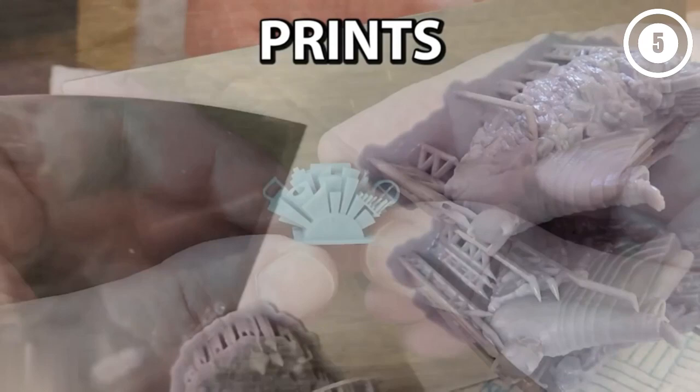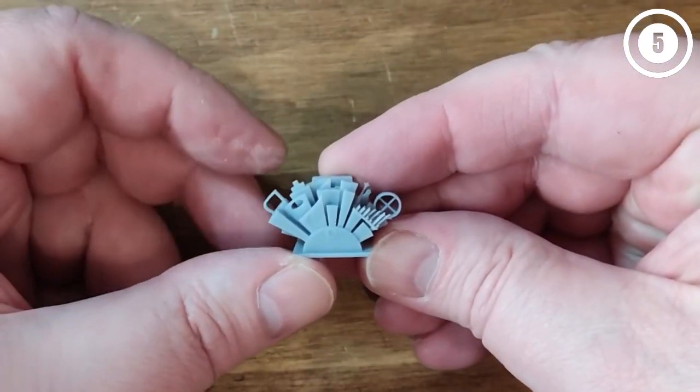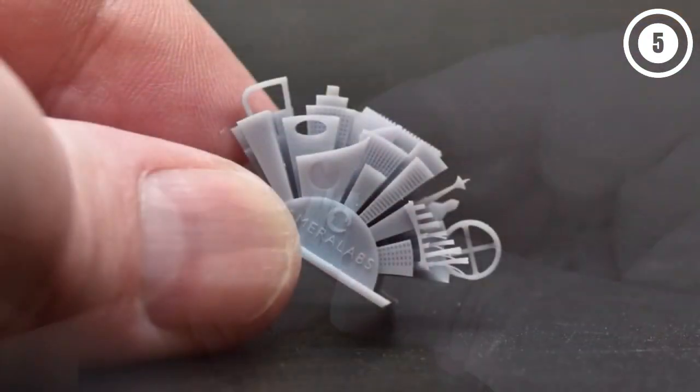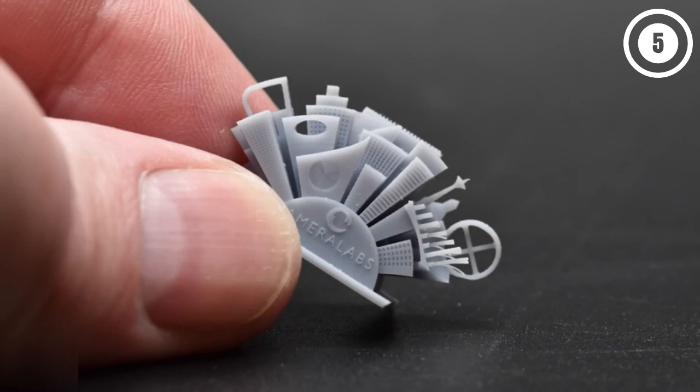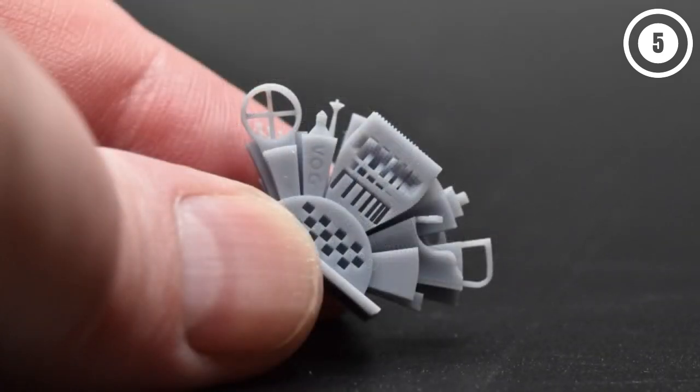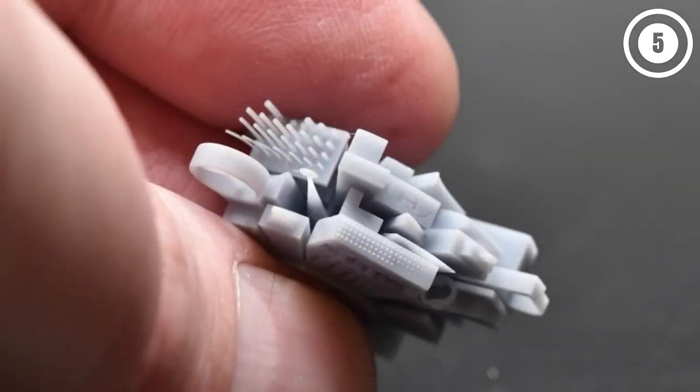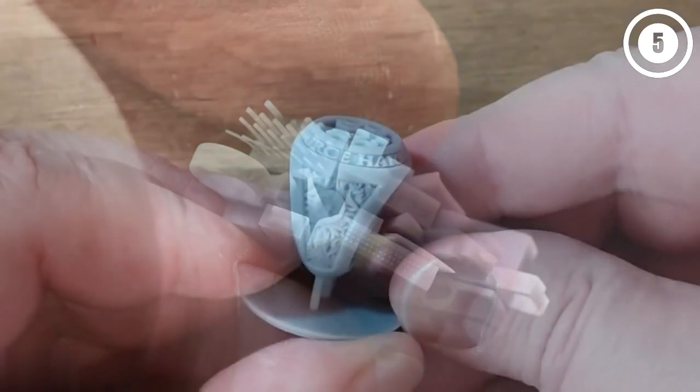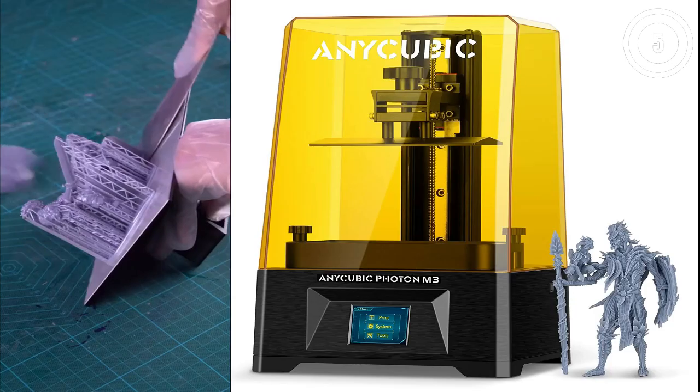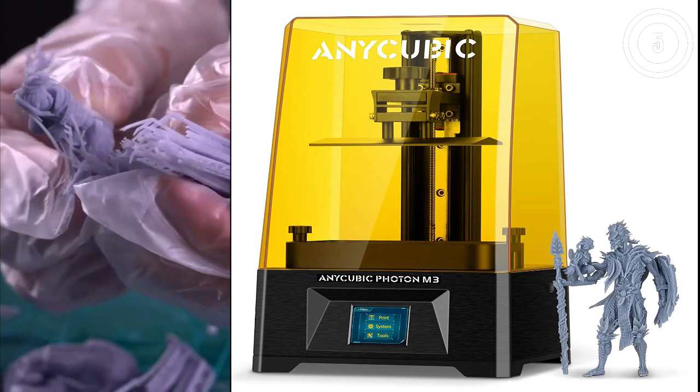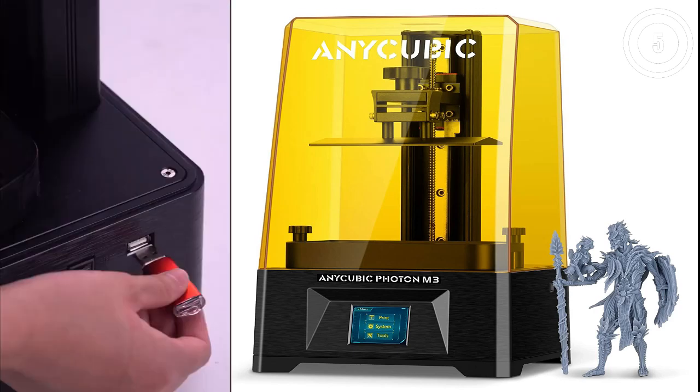A sample print of a unicorn was extremely detailed with the ridges on its horn and its mane appearing really sharp and free from layer lines. It was also a full 108mm tall and printed in 10 hours. The etched build plate works really well holding models tight during printing, but also allows for easy removal when they are done.